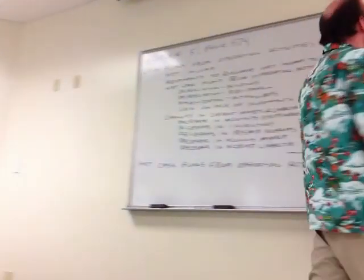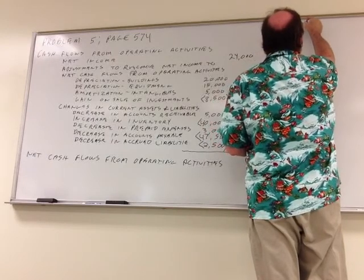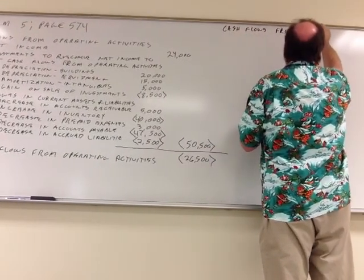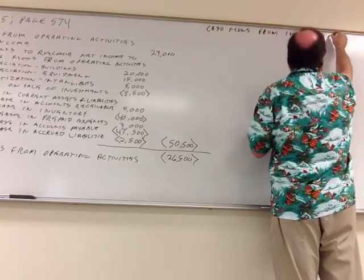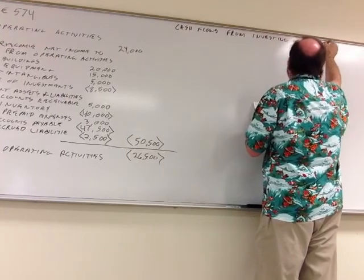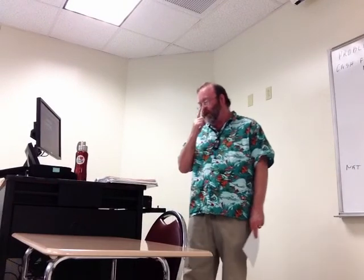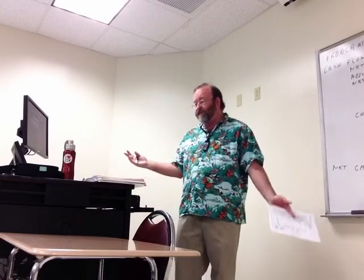That's the first of the three sections. The second section is cash flows from investing activities — this is the rest of the asset side of the balance sheet. We've done the current assets from cash down to prepaid expenses, so now we're going to do all of the net changes in long-term investments, land, buildings, equipment, and intangible assets. Long-term investments went from $110,000 to $110,000 — looks like nothing happened.